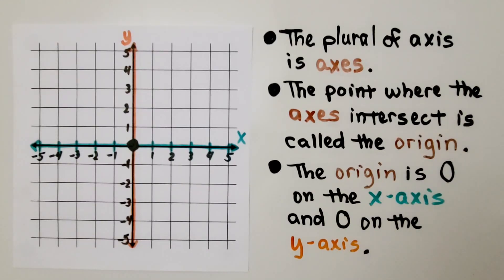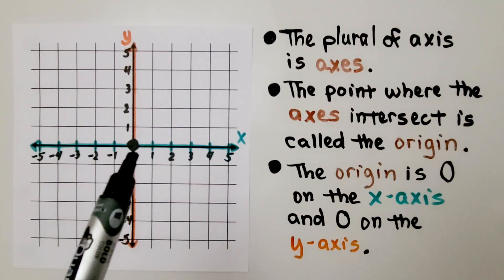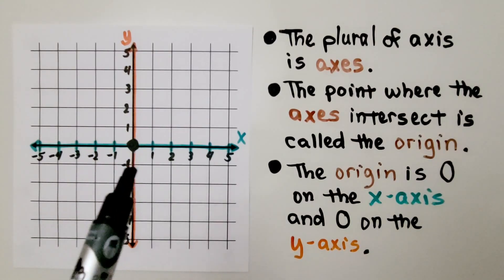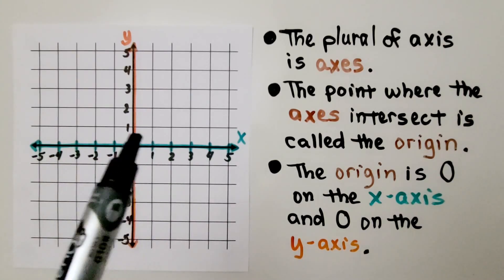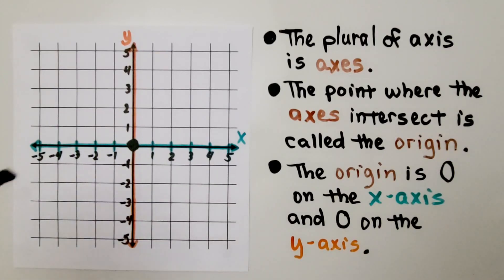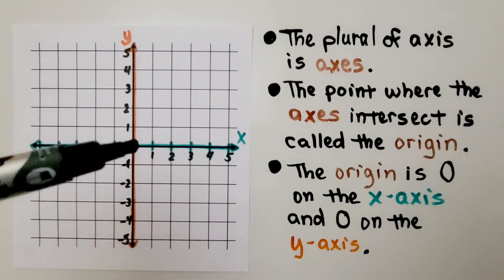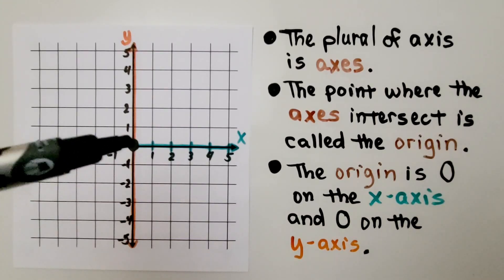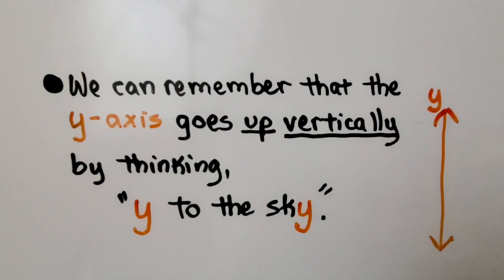The point where the axes intersect is called the origin. The origin is zero on the x — we can see negative one and positive one, and in between them is zero. And it's zero on the y-axis as well — here's positive one and negative one, and the origin is in between. So the point where they meet is the origin. We can remember that the y-axis goes up vertically by thinking 'y to the sky.'